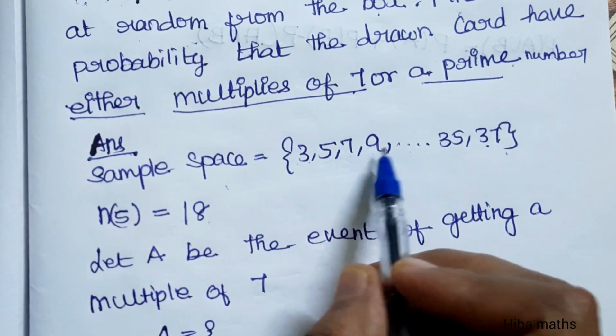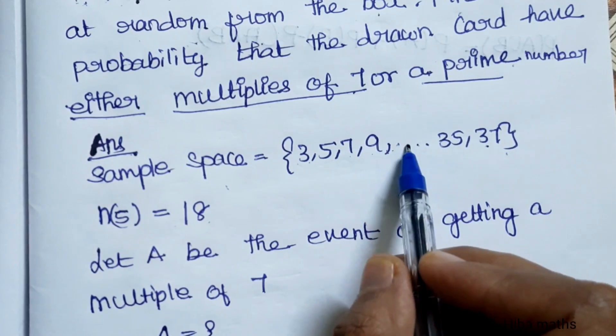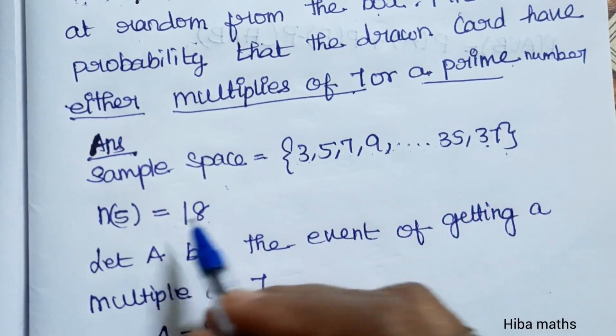Let me count: 3, 5, 7, 9, 11, 13, 15, 17. That is 18 numbers in total.